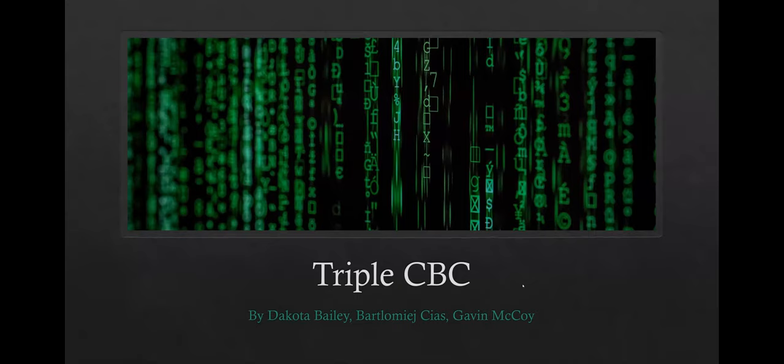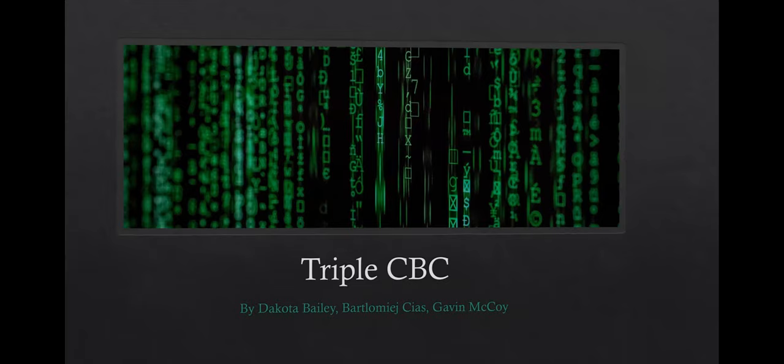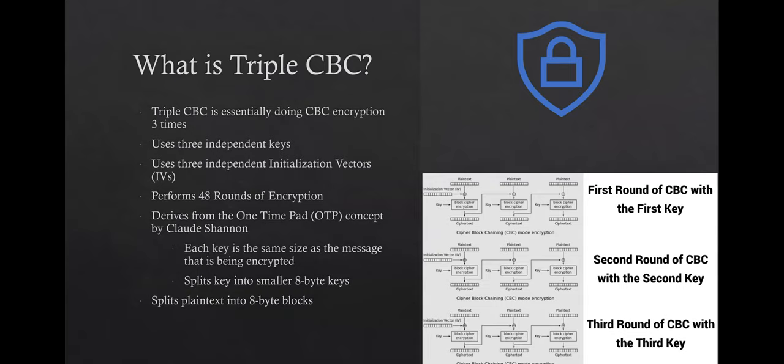My name is Dakota Bailey, I'm Bart Sias, I'm Gavin McCoy, and today we'll be presenting our own encryption algorithm called Triple CBC. As the name suggests, we perform CBC encryption three different times, using three independent keys and three independent initialization vectors, performing a total of 48 rounds of encryption. We wanted our algorithm to derive from Claude Shannon's one-time pad (OTP) concept, meaning each key is the exact same size as the message being encrypted.